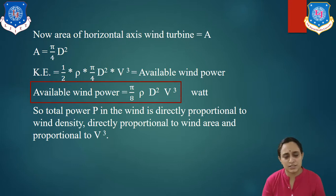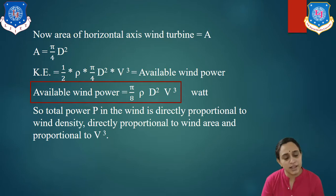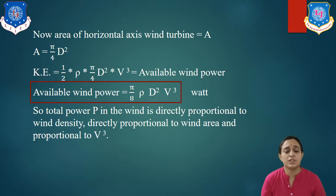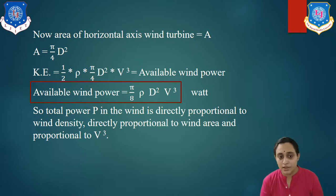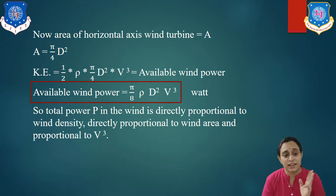Wind power is obtained from this expression. It tells us the maximum power available from the wind. Power varies according to the square of the rotor diameter — wind power is directly proportional to D². It is also directly proportional to the cube of wind velocity, i.e., P ∝ V³. In total, power P depends proportionally on wind density ρ, on swept area A, and on wind velocity cubed.